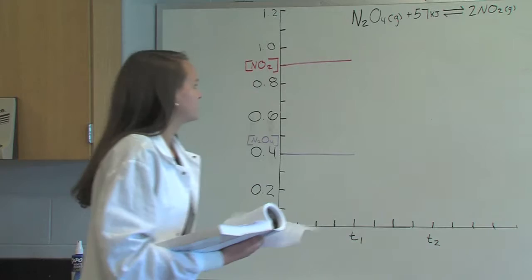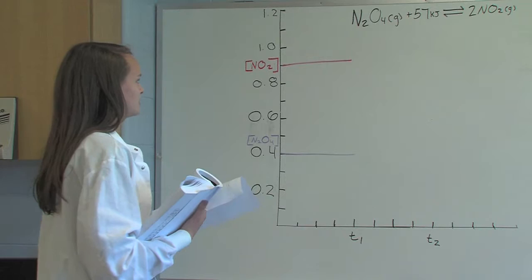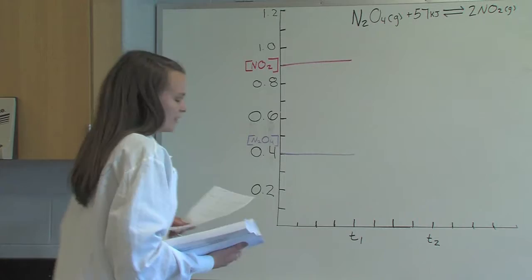When the system is cooled, the equation will shift left to compensate for the loss of energy, which will result in an increase in N2O4 and a decrease in 2NO2.